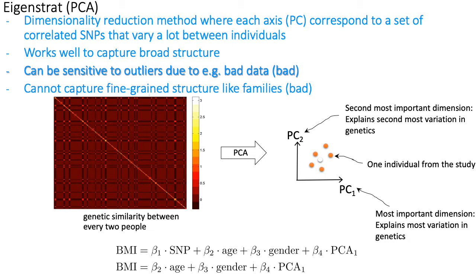If you want to visualize individuals in a scatter plot where axes correspond to SNPs and points correspond to individuals, it's really hard — you can't draw a 10-million-dimensional scatter plot on paper. The idea of PCA is that it takes these high-dimensional measurements and creates pseudo-SNPs, or meta-SNPs, represented as axes PC1 and PC2 in this figure.